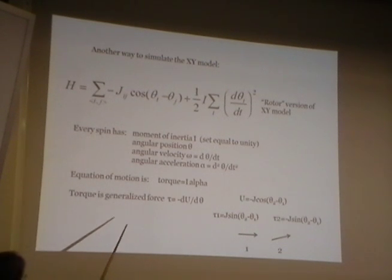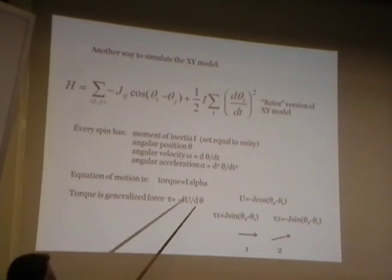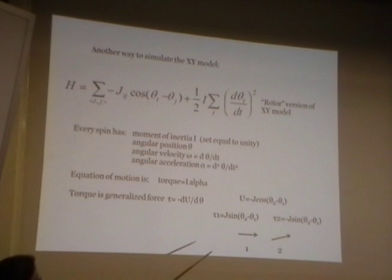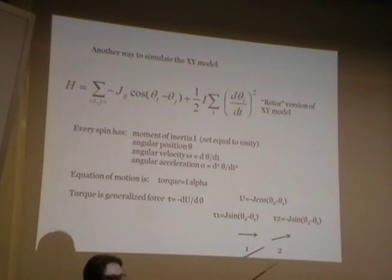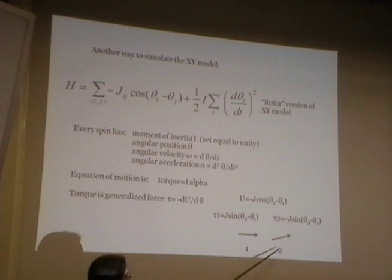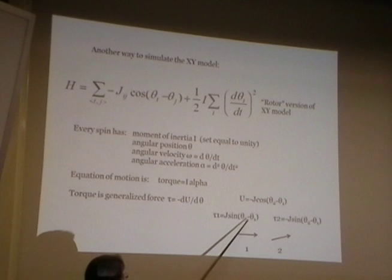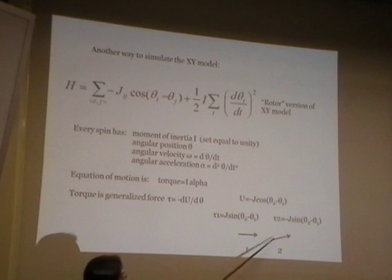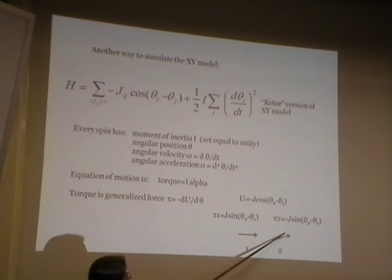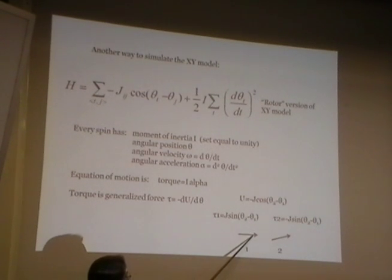The equation of motion is torque equals I-alpha. The torque is a generalized force — it's the derivative of the energy with respect to the angular orientation. For two neighboring spins theta-one and theta-two, where horizontal is theta zero and theta increases upward, if the energy has the dot product form, the torque on spin one is minus dU/d-theta-one.